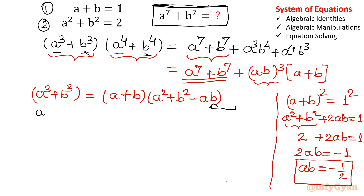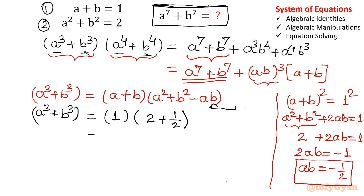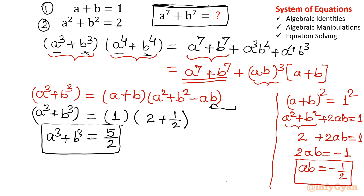Now I will substitute ab into the identity. a³+b³ = (a+b)(a²+b²−ab). From equation 1, a+b = 1. From equation 2, a²+b² = 2. And ab = −1/2, so minus ab becomes plus 1/2. Therefore a³+b³ = 1 × (2 + 1/2) = 5/2. We call this equation 4, and the main expression is equation 3.